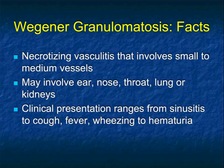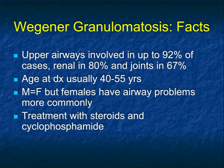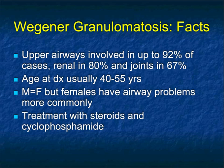Wegener's can present many different ways in the lung — from small nodules to single to multiple, to infiltration of the trachea or main stem bronchi and collapse. Wegener's is interesting: it's a necrotizing vasculitis that involves small to medium vessels and can involve the nose, throat, lung, or kidneys. Clinical presentations range from sinusitis to cough to fever to wheezing and to hematuria. The upper airways are involved in up to 92% of cases, the kidneys in 80%, and joints in about 67%. The age of diagnosis is usually 40 to 55 years. Treatment is typically with steroids and cyclophosphamide.